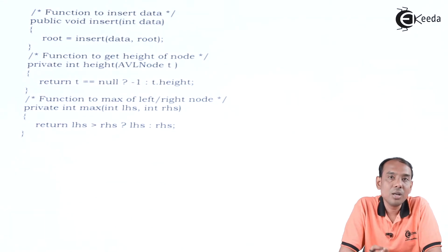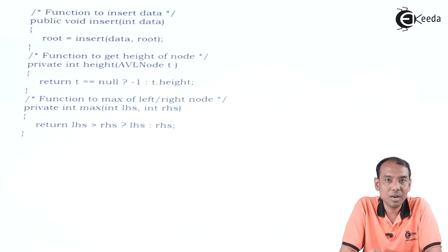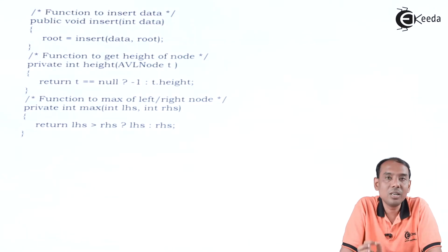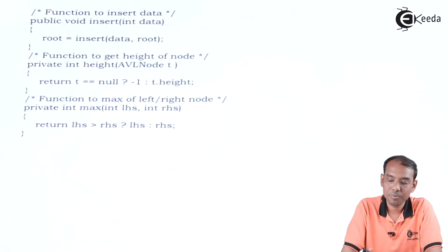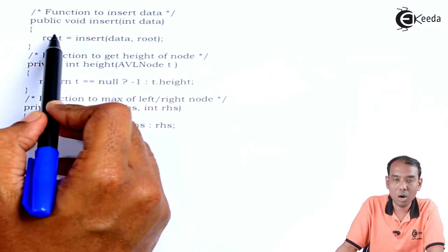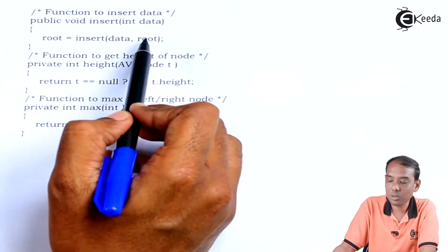Once we are done with the AVL tree structure definition, we define a function to insert data into the AVL tree. It is very important to understand that for every node, the balancing factor — height of left subtree minus height of right subtree — must be -1, +1, or 0. If not, we perform one of the four rotations. We write public void insert(data), where root is updated: root = insert(data, root).